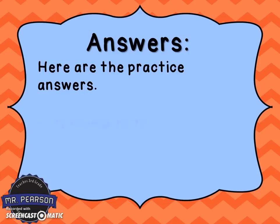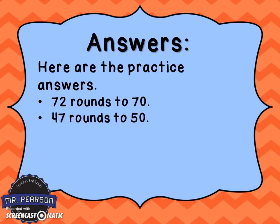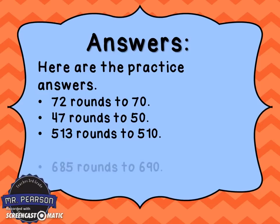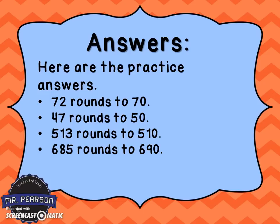Here are the answers to the practice questions. 72 rounds to 70. 47 was between 40 and 50, and 47 is closest to 50. 513 is between 510 and 520, and 513 is closest to 510. 685 is between 680 and 690, and it rounds up to 690. And the challenge problem — 4,321 is between 4,320 and 4,330, so it rounds to 4,320.